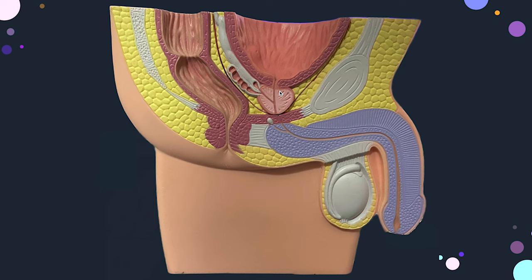The prostate is a walnut-shaped organ, partially made up of glands and partially fibromuscular tissue. It lies under the urinary bladder and above the urogenital diaphragm, and is pierced by the urethra — the part passing through the prostate is called the prostatic urethra. Its dimensions are four centimeters by three centimeters by two centimeters. The prostate provides a secretion which contributes to the seminal fluid.